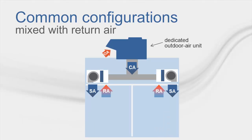Another common configuration is to design the DOA so that the conditioned outdoor air is delivered to the return outdoor air intake for each of those room's fan coils. The fan coils then condition that mixed air to meet the remaining cooling and heating loads.